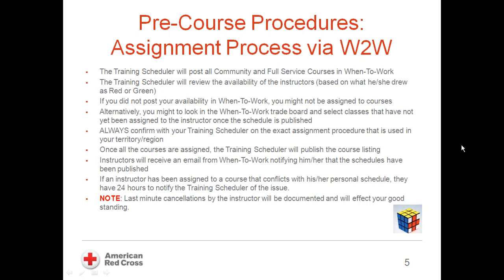Community and full-service classes, once established, will be posted in the When to Work scheduling system. The training scheduler will assign you based on the availability you entered in the system — green for available and red for not available. Typically, you should frequently update your availability in the system at the beginning of each month to reflect the next month.